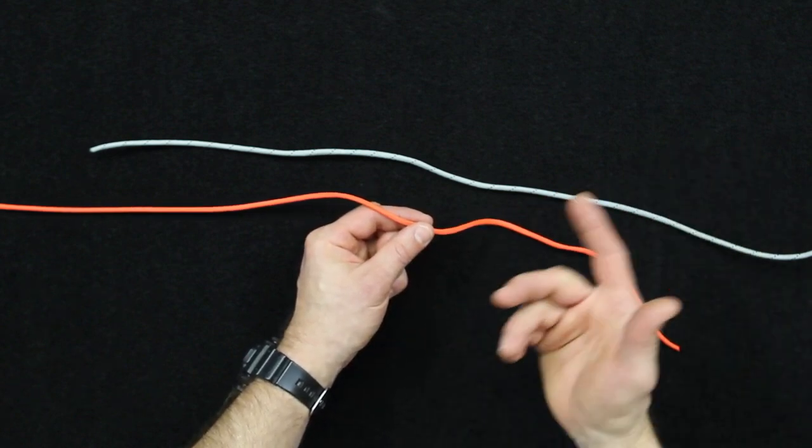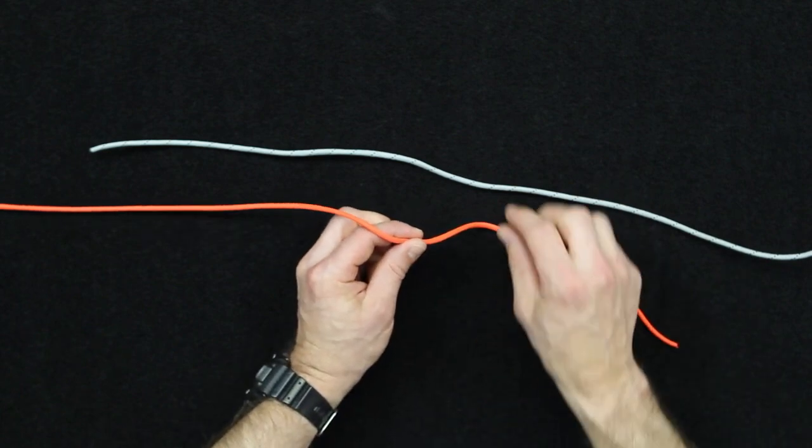I would kind of push you more towards the nail knot, which we will get into later on. So this is how to tie the blood knot.